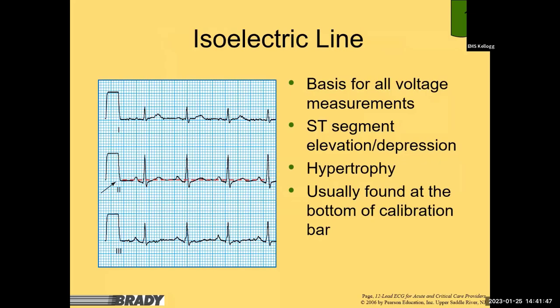The isoelectric line is the basis for all voltage measurements on a 12-lead. The machine fires up, activates, hits a flat line, then drops back down — where it drops to creates a box that almost looks like a capnography waveform, and that determines the beginning of the isoelectric line. It's usually found at the bottom of the calibration bar, and is generally accurate as long as leads are properly placed. ST elevation, depression, or ventricular hypertrophy can affect the isoelectric line.